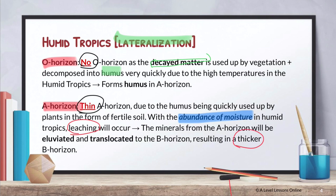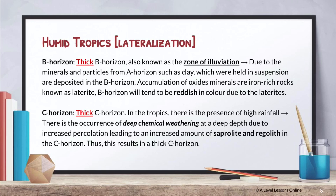The B horizon is known as the zone of illuviation — it is a very thick B horizon because all your minerals are leached away from the A horizon and translocated into the B horizon. As a result, there is a lot of accumulation of oxide minerals, and these iron-rich oxide minerals are known as laterites. That is where the term laterization comes from. These laterites are reddish in colour because of the oxide minerals present.